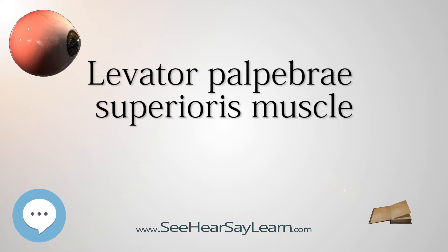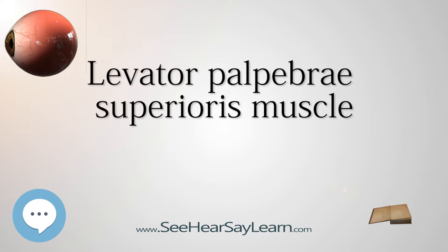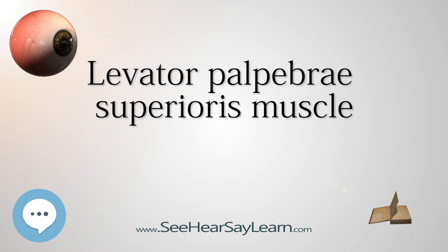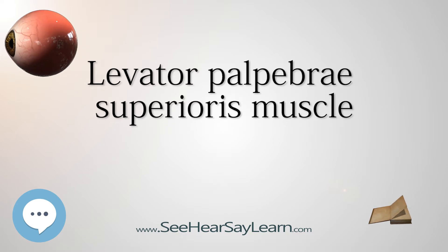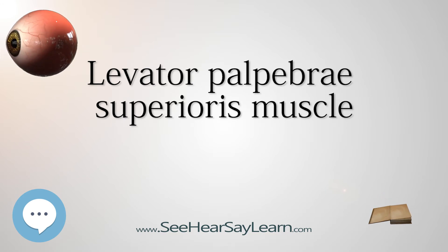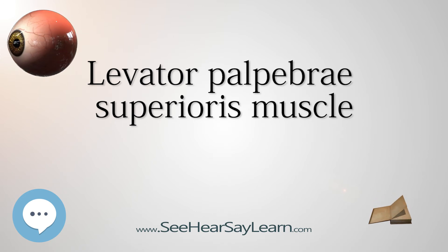Clinical Significance: Damage to this muscle or its innervation can cause ptosis, which is drooping of the eyelid. Lesions in CN3 can cause ptosis because without stimulation from the oculomotor nerve, the levator palpebrae cannot oppose the force of gravity and the eyelid droops. Ptosis can also result from damage to the adjoining superior tarsal muscle or its sympathetic innervation, such as in Horner's syndrome, which presents as a partial ptosis.